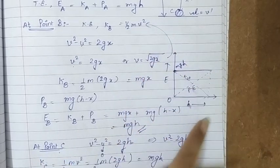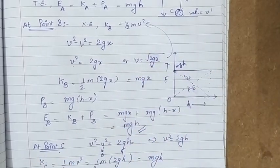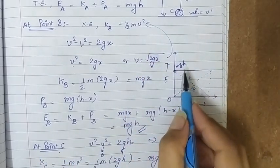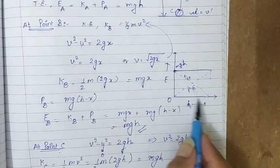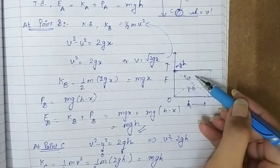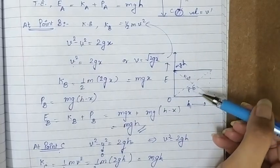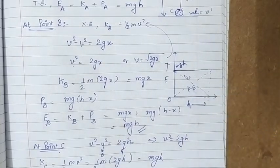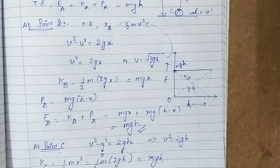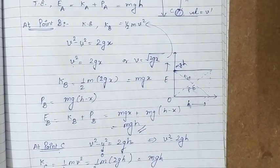So we can show it graphically — total energy remains constant at all points, but kinetic and potential energy keep on changing while their sum is always the same. That is how we prove the conservation of mechanical energy in a freely falling body. That's all for the video. For further videos, stay tuned and keep studying. Thank you.